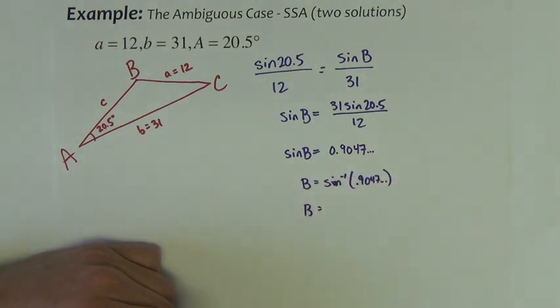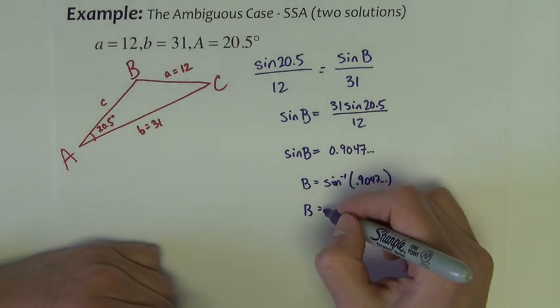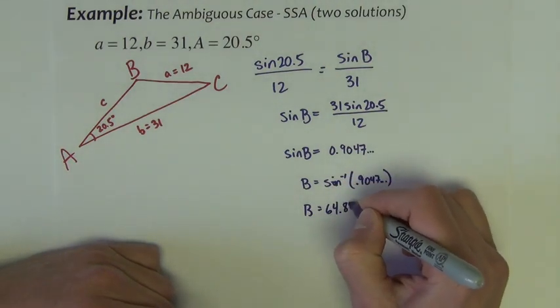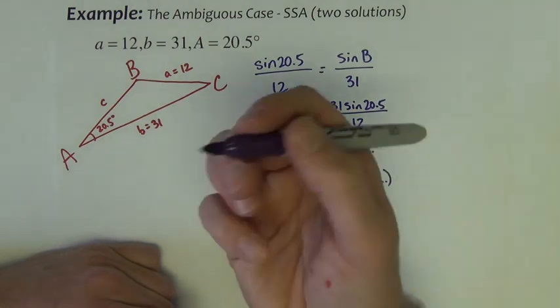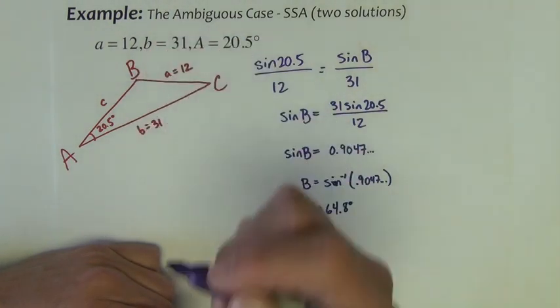And I get angle B then to be about 64.8 degrees. So that's up here, 64.8 degrees.